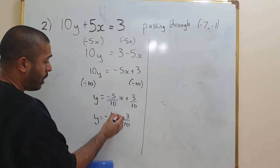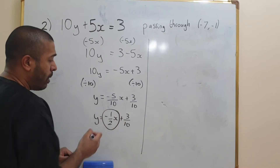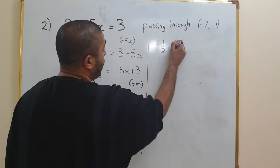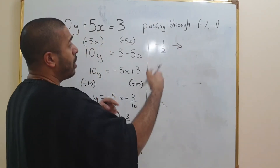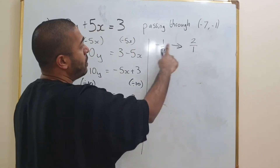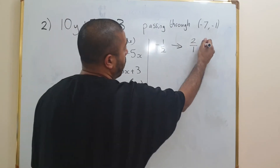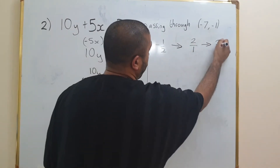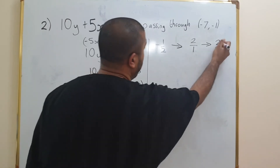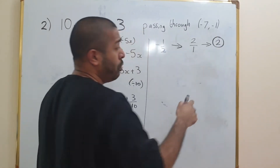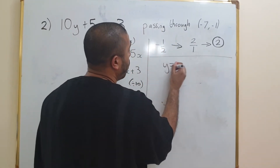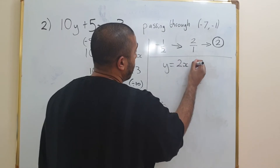Now we need to find the line that's perpendicular to this one. We have the gradient, which is minus one half. The negative reciprocal of that is going to be 2 over 1. The reason this is positive is because the first one is a negative. This simplifies to 2, because 2 divided by 1 is 2. So our gradient is 2 for the perpendicular line, meaning it's going to be y equals 2x plus c.